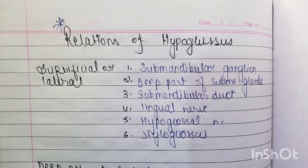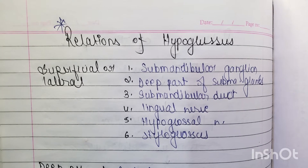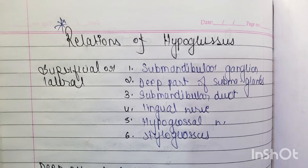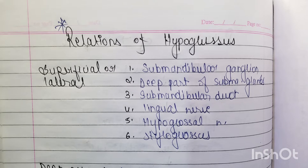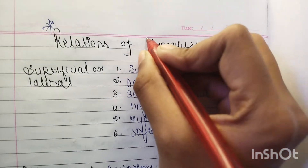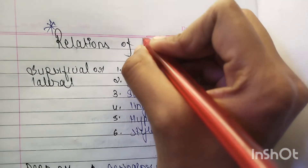Hello everyone, welcome to SAM — Study Art, Motivation and Education. In this video we are going to discuss the relations of the hyoglossus muscle. We have discussed in our previous videos, in tongue anatomy, that hyoglossus is an extrinsic muscle of the tongue.